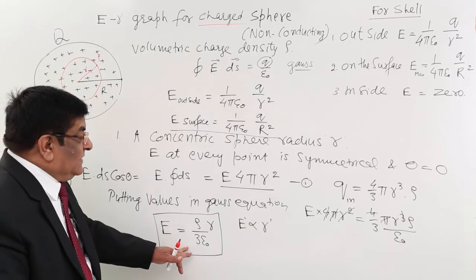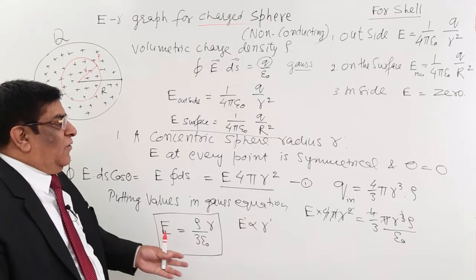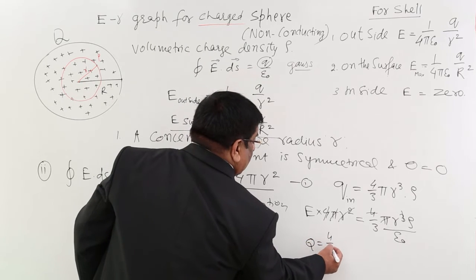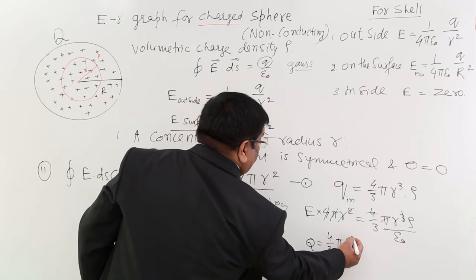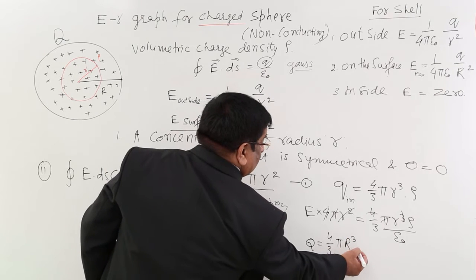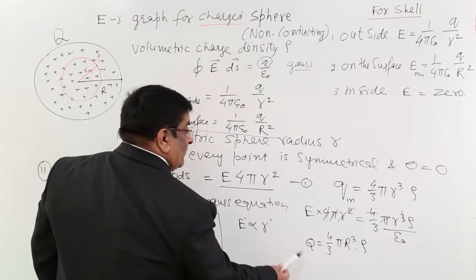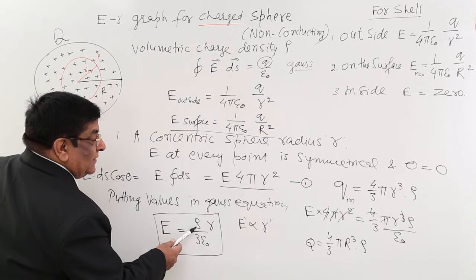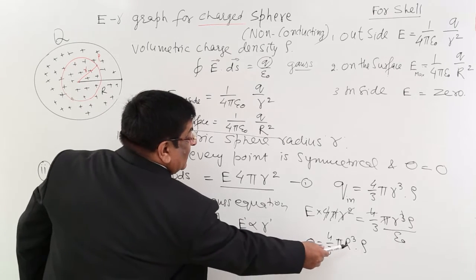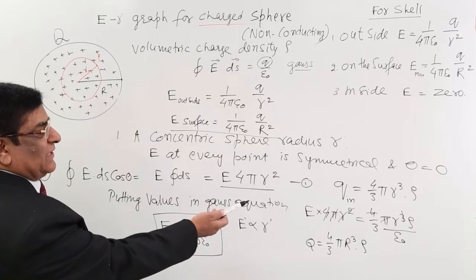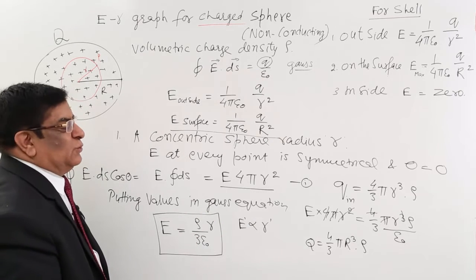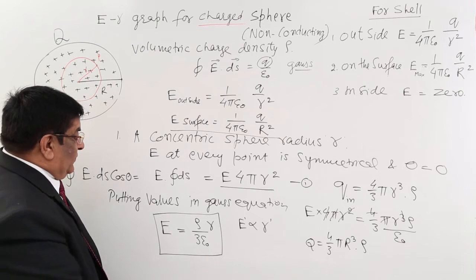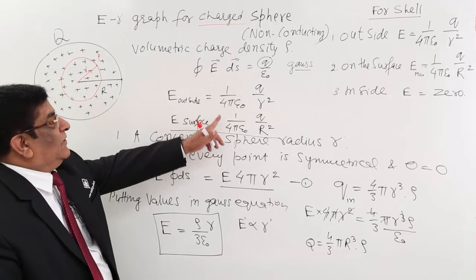If you want to convert it in respect to capital Q, you can always do that. Because you know that Q is equal to 4 upon 3 pi R cube multiplied by rho. So find the value of rho from here, put that value here. Then what will you have? Q and R cube. But generally we do not use that. That is not of much use to us. But you can always convert it into Q and capital R. So this is our formula.